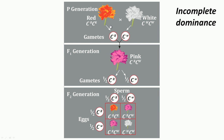An example of incomplete dominance: if you take true-breeding red and white flowers and cross them together, the gametes would be C^R and C^W. In the F1 generation, all flowers would be pink — somewhere between red and white. C^R C^W has resulted in a pink flower, no longer red. In the F2 generation, one-fourth would be red, half would be pink, and one-fourth would be white. This is an example of incomplete dominance, different from Mendelian predictions.